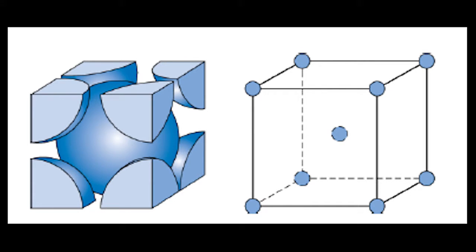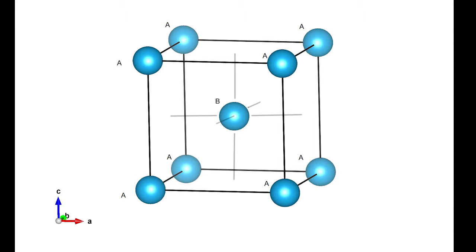The next parameter we are looking at is the coordination number. This is the number of atoms in contact with each atom within a crystal structure. Looking at the single atom in the center of a BCC cell, we can see that it is touching eight other atoms, one in each of the corners. This makes the coordination number for a BCC crystal structure equal to eight.